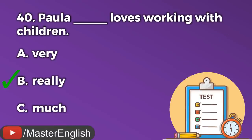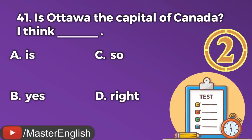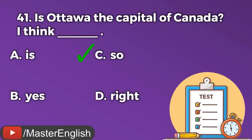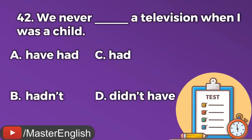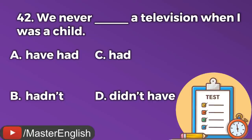Question number forty. Paula really loves working with children. Question number forty-one. Is Ottawa the capital of Canada? I think ___. A: Is. B: So. C: Yes. D: Right. The correct answer is B: So. I think so. Question number forty-two. We never ___ a television when I was a child. A: Have had. B: Hadn't. C: Had. D: Didn't have. The correct answer is C: Had. We never had a television when I was a child.